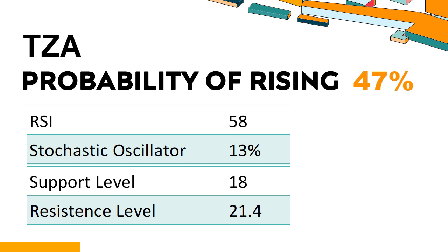The current stochastic oscillator of TZA is 13%. When the indicator falls below the 20 level, it is usually considered oversold, indicating that a price rebound or recovery is likely. An oversold condition occurs when the stock price falls too fast and too much in a short period of time, which may indicate that the selling pressure has exhausted.